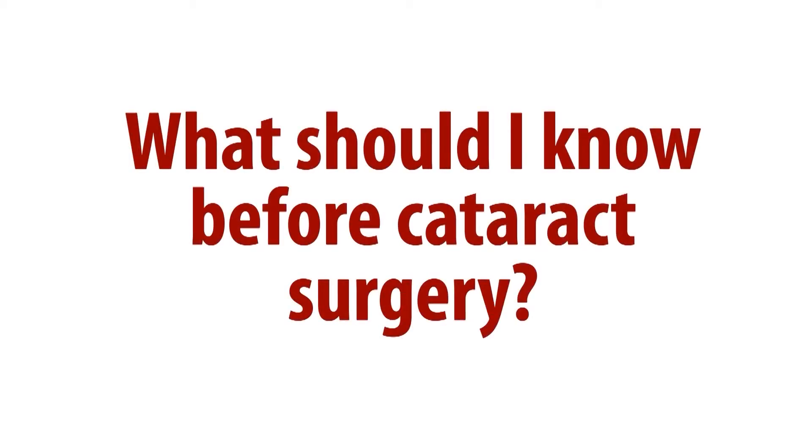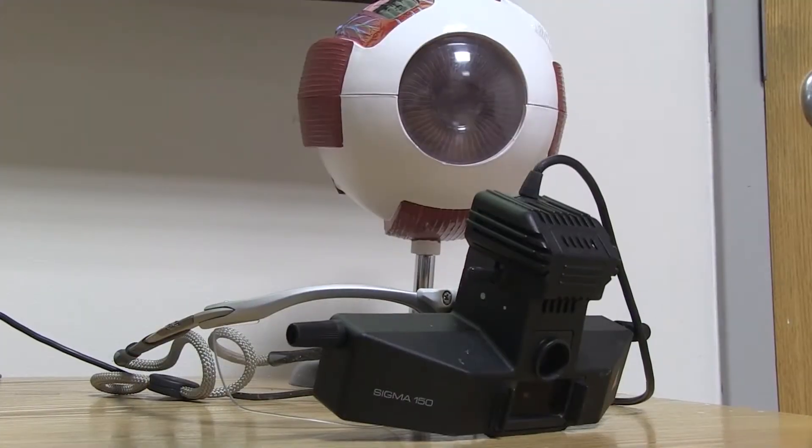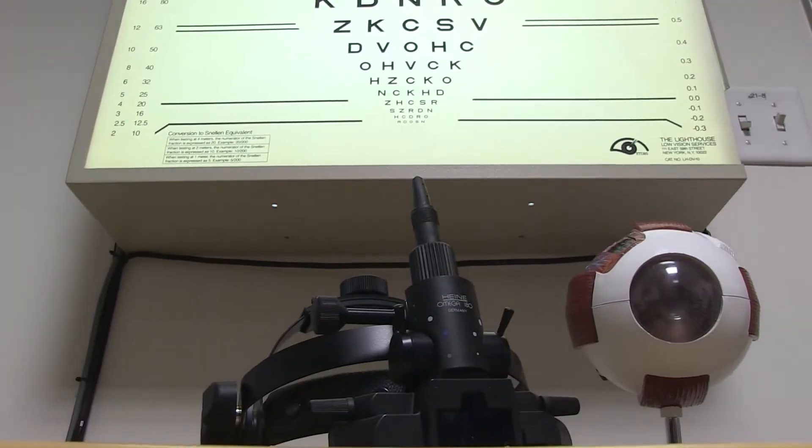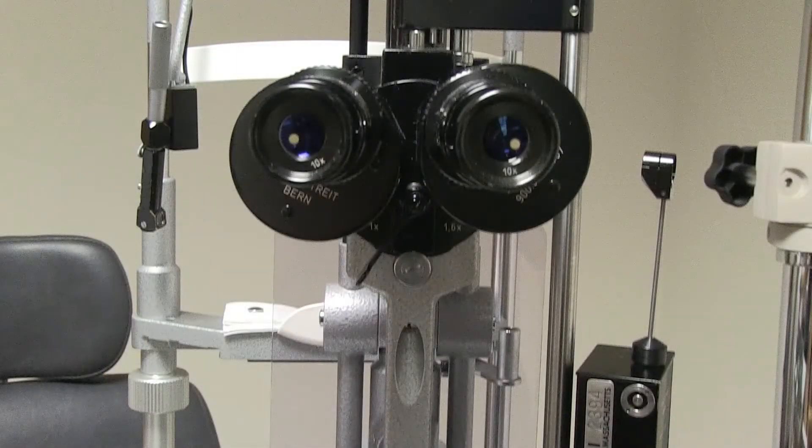Before we decide on the cataract surgery, we want to make sure what level of retinopathy is present, if at all, and if there are any other medical or surgical issues in the eye that can be affected by the cataract surgery. For patients with diabetes, the level of retinopathy can be assessed by careful retinal examination with a direct ophthalmoscope, indirect ophthalmoscope, and also with a slit lamp with different kinds of magnifying lenses.